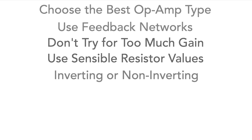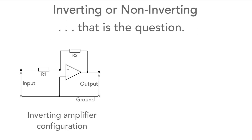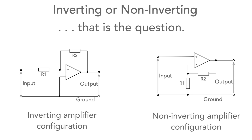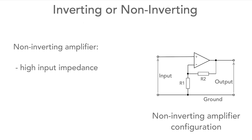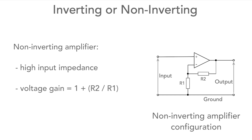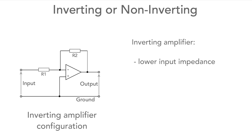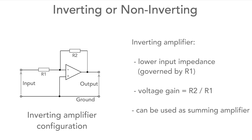And finally, for amplifier circuits choose whether you want an inverting or non-inverting configuration. The non-inverting amplifier has a high input impedance and the gain is calculated from the formula 1 plus R2 over R1. The inverting amplifier has a low input impedance — that of the input resistor — and the gain is equal to R2 divided by R1. Also the inverting configuration can be used as a summing amplifier, so think about what you want before you start designing.